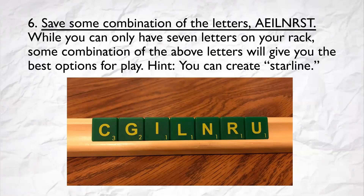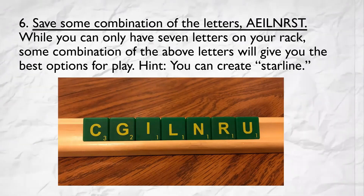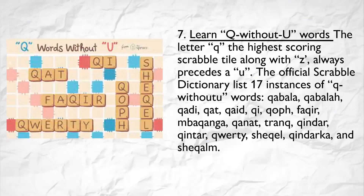Hint: you can create sterling combinations. And last, Trick 7: Learn Q-without-U words. The letter Q — the highest scoring Scrabble tile along with Z — almost always precedes a U. However, the official Scrabble dictionary lists 17 instances of Q-without-U words, and these are the words.